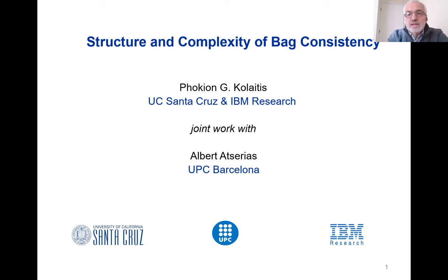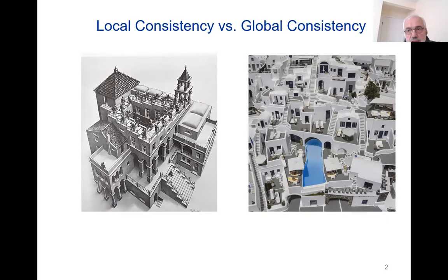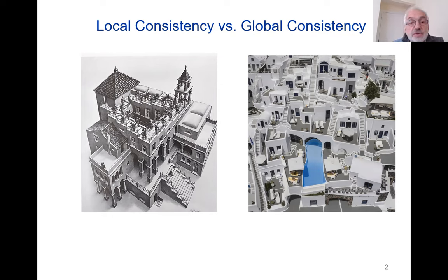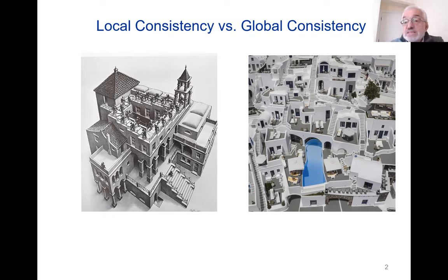Let me begin by sharing with you these two images and asking you to take a close look at each of them. I'm sure most of you are familiar with the image on the left. It is a well-known drawing by MC Escher called Ascending and Descending. What is the characteristic feature of this drawing? If you focus on any particular part, for instance one of the staircases, it's perfectly meaningful, perfectly consistent, and perfectly realized in the real world.